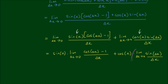Let's deal with this second limit first because it is familiar — in a previous video, which I'll link in the top right corner, we found that the limit as Δx approaches zero of sine(Δx) / Δx goes to one. So we have cosine(x) times one.